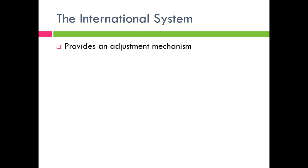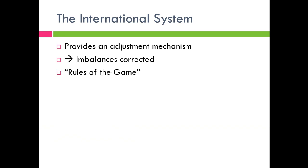What an international system does is it provides an adjustment mechanism. It allows for imbalances to be corrected, including trade imbalances or other macroeconomic imbalances. There's a book by McKinnon called 'Rules of the Game' that goes through exactly what each country has to follow for the system to keep working. If one country leaves the game or breaks the rules, then the system might fall apart. Generally speaking, there's a center to the system — it's been the dollar in recent decades, and for a while it was gold.